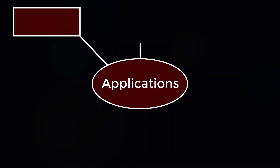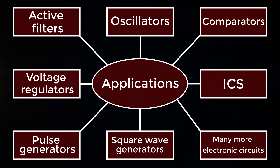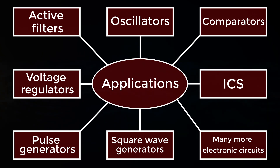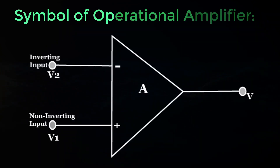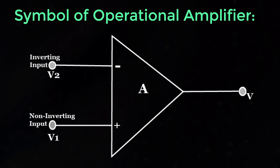The application of Op Amps varies from AC and DC signal amplifiers. AC applications include active filters, oscillators, comparators, voltage regulators, instrumentation and control systems, pulse generators, square wave generators, and many more electronic circuits.